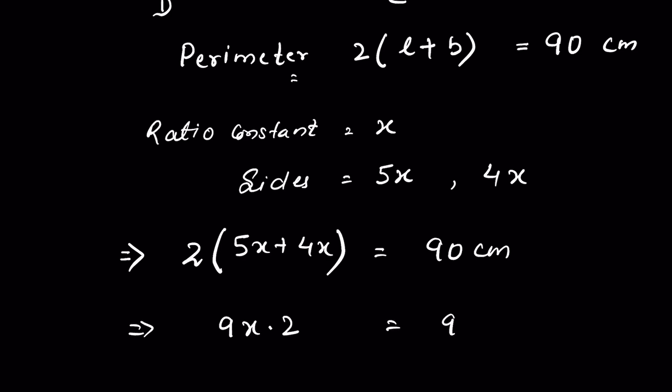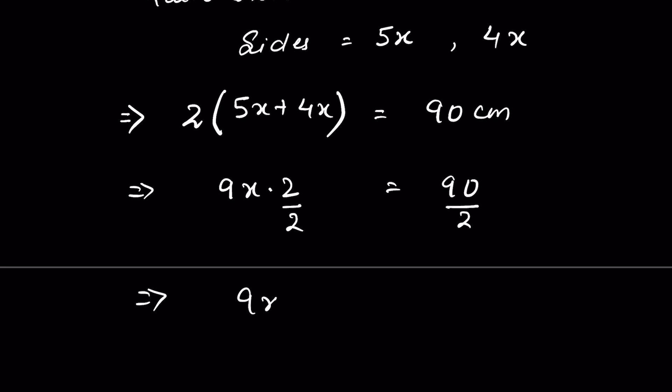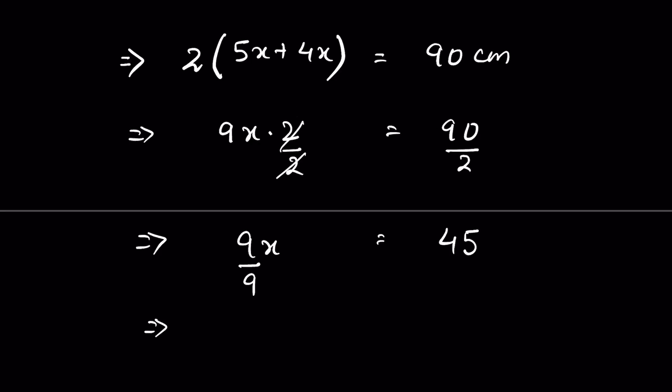Divide both the sides by 2, so we have 9x is equal to 45. Again divide both the sides by 9, so x is equal to 5. 9 times 5 is 45, x is equal to 5.